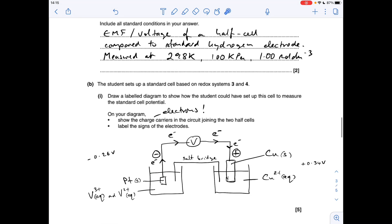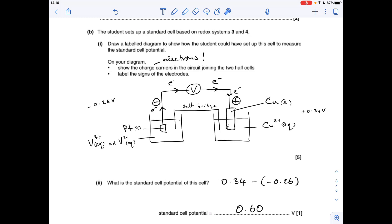In terms of a diagram, two beakers. I've put the V3+ 2+ in the left hand side beaker, doesn't matter which way around. We need a solid platinum electrode, and then a salt bridge connecting to the copper 2+ solution, copper electrode. The least positive, the -0.26 volts, that's your negative electrode. +0.34 volts, that's your positive electrode. The electrons go from the least positive to the most positive. Another standard cell potential calculation, most positive minus least, 0.60 volts.